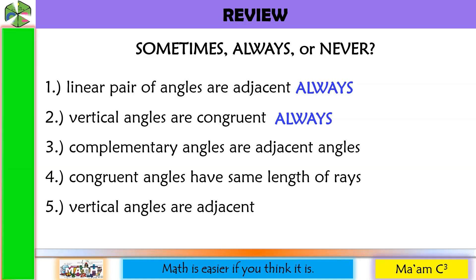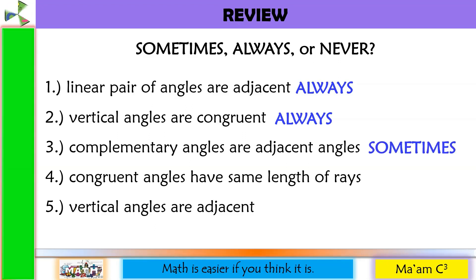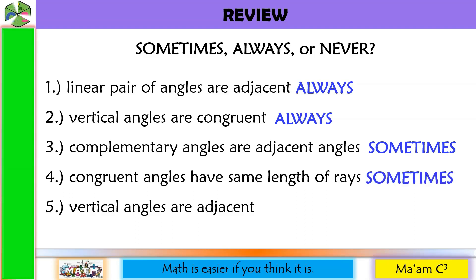Number 3: Complementary angles are adjacent angles. This is sometimes — sometimes they are adjacent, sometimes not. Number 4: Congruent angles have the same length of rays. This is sometimes.